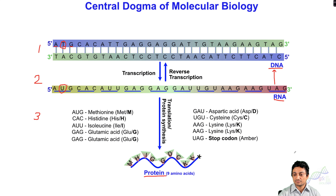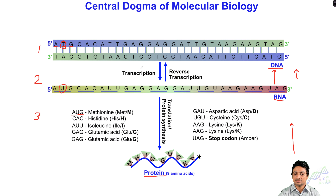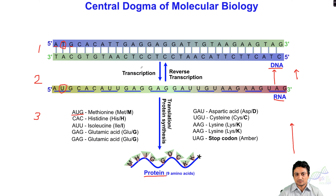Theoretically, the information in the protein can flow back to RNA and from RNA back to DNA, and this is possible only theoretically. For example, methionine — the sequence for methionine is AUG, and this AUG can be converted into DNA sequence ATG. So the information can also flow back to DNA from protein. As a whole, this whole process is called central dogma of molecular biology, which is the flow of information from DNA to RNA to protein and also the flow of information back to DNA from protein.